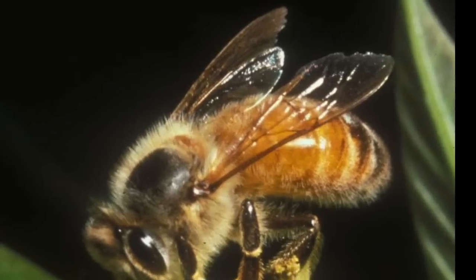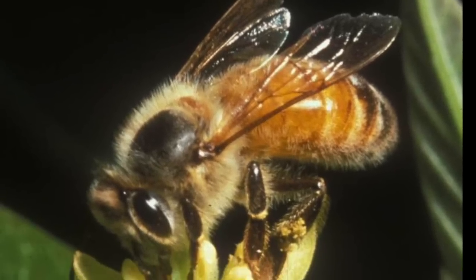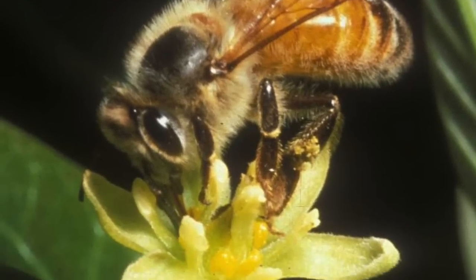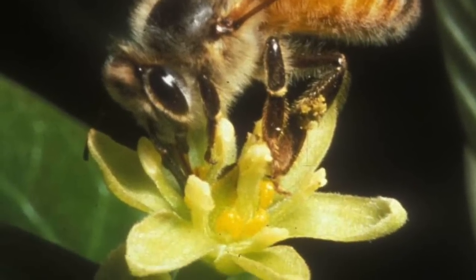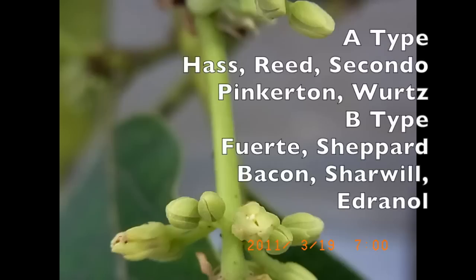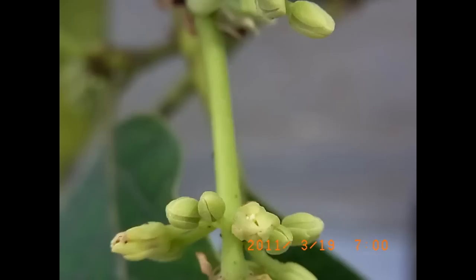Then we require our friends the bees to take the pollen from the male to the female. The difference between A type avocados and B type is when the female flowers open. A type, the female flowers open in the morning, but B type, the female flowers open in the afternoon.